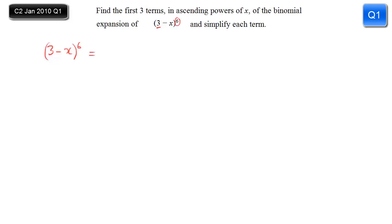We always start with the first term in your bracket to the power that you're given, so we have 3 to the power of 6. What's invisible there is the first coefficient, which is 1. We know that the first number in any row of Pascal's triangle is 1, so that's an invisible 6 choose 0 — anything choose 0 equals 1.